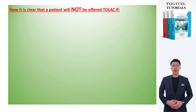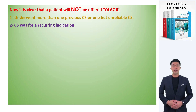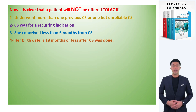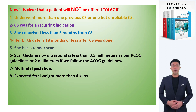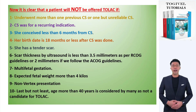To summarize, a patient will not be offered TOLAC if: (1) she underwent more than one previous CS or one but unreliable CS; (2) the CS was for a recurring indication; (3) she conceived less than 6 months from CS; (4) her birth date is 18 months or less after CS; (5) she has a tender scar; (6) scar thickness by ultrasound is less than 3.5 mm per RCOG guidelines or less than 2 mm per ACOG guidelines; (7) multifetal gestation; (8) expected fetal weight more than 4 kilos; (9) non-vertex presentation; and (10) age more than 40 years is considered by many as not a candidate for TOLAC.